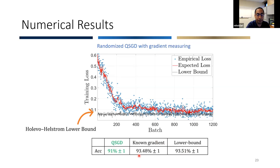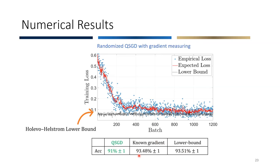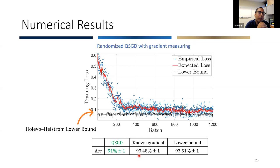The Holevo-Helstrom lower bound is based on state discrimination: maximizing over all measurements to distinguish between two quantum states, based on the trace-norm distance.